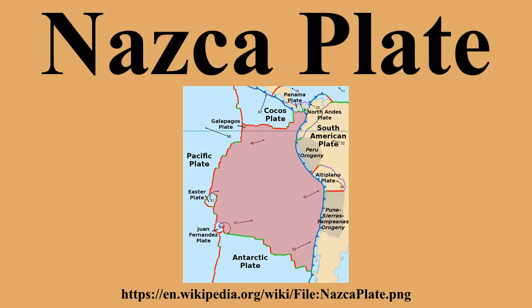The Nazca Plate is bounded on the west by the Pacific Plate and to the south by the Antarctic Plate, through the East Pacific Rise and the Chile Rise, respectively. The movement of the Nazca Plate over several hotspots has created some volcanic islands as well as east-west running seamount chains that subduct.